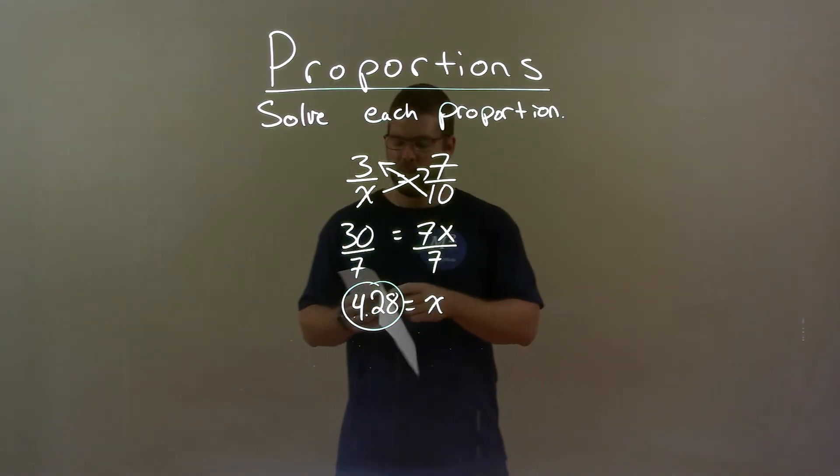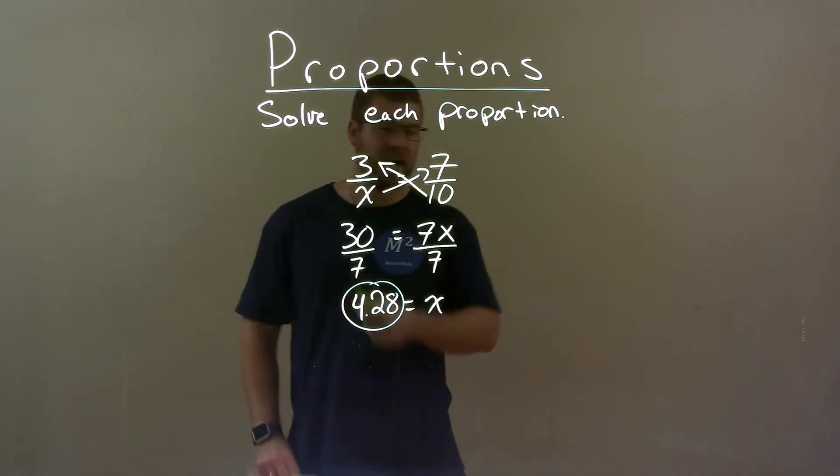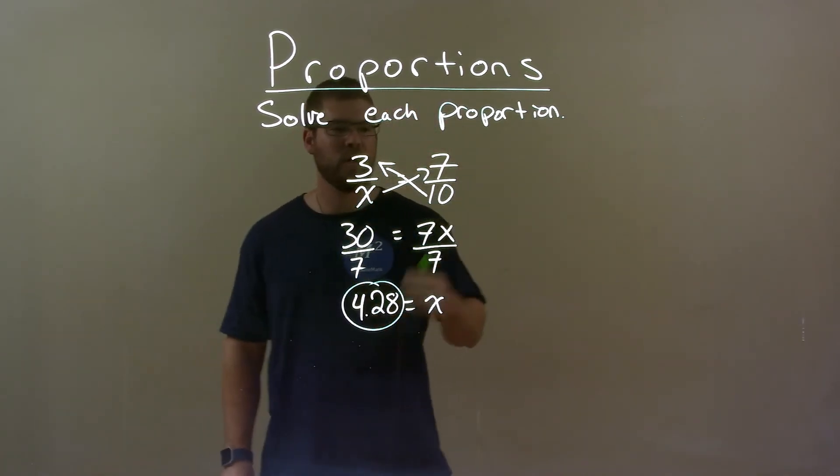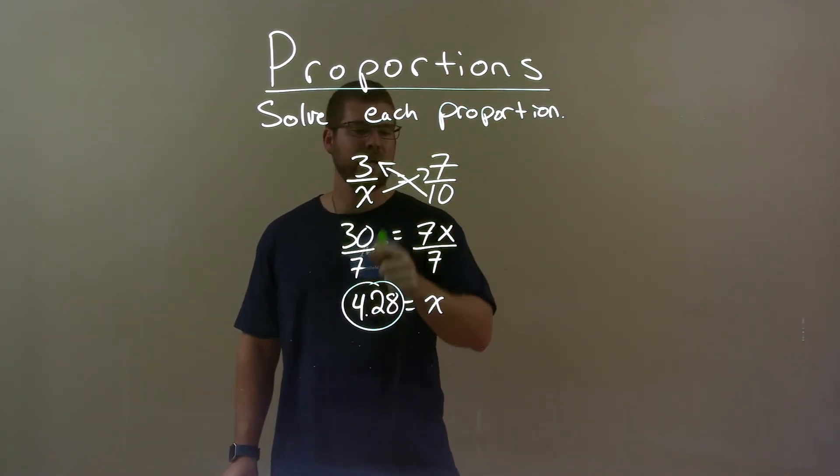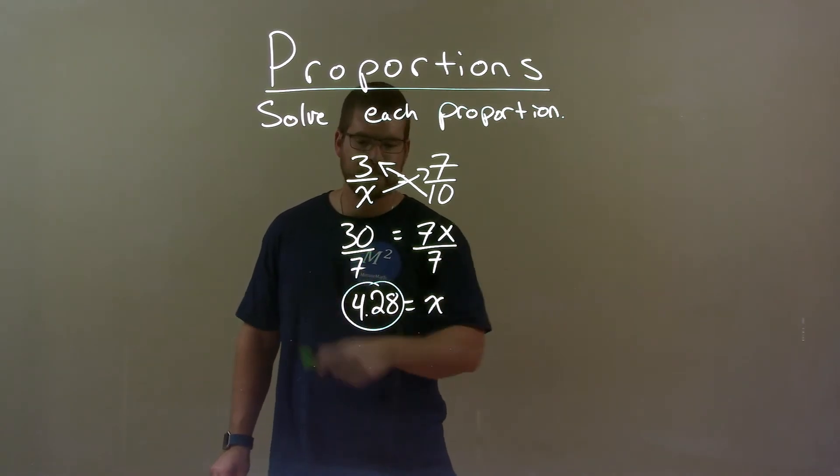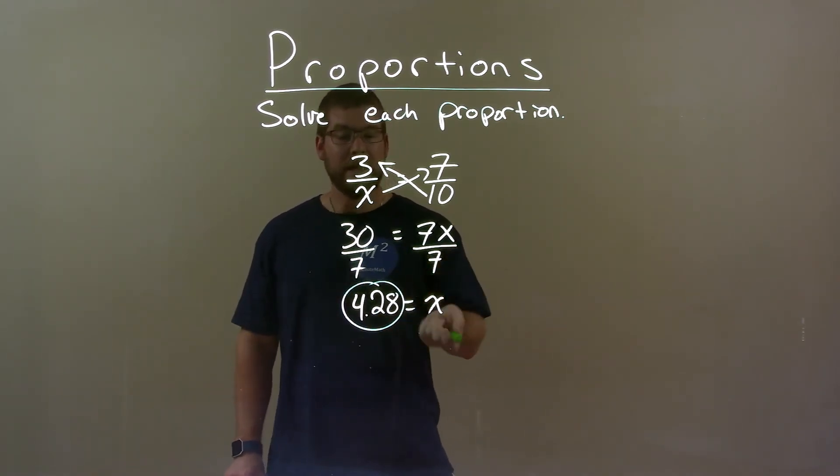Quick recap, we're given 3 over x equals 7 over 10, and we just solve that proportion. Well, we cross-multiply and got 30 equals 7x. Divide both sides by 7, got x by itself, equal to our final answer, 4.28.